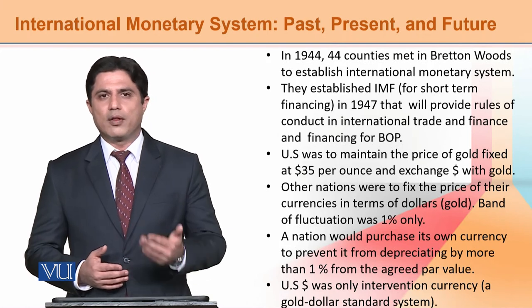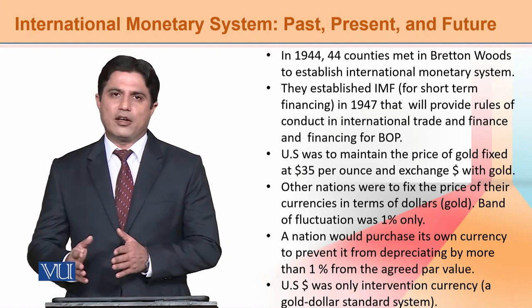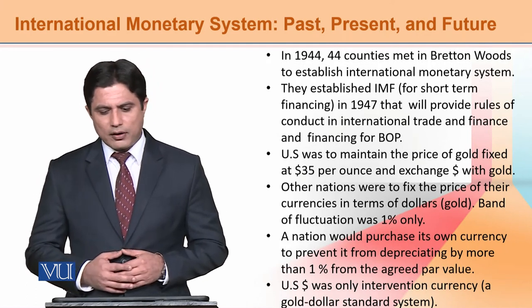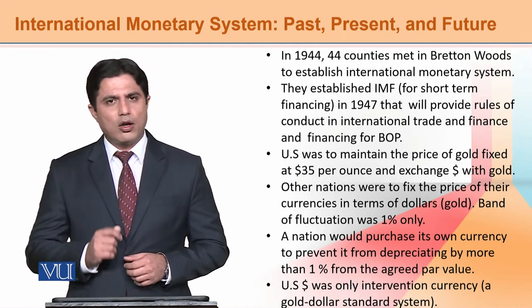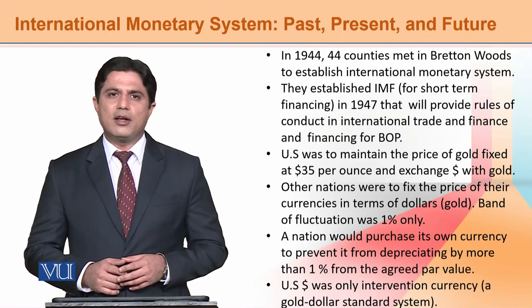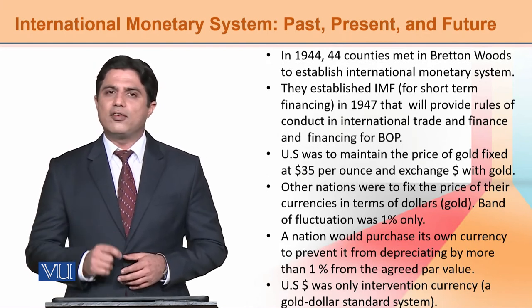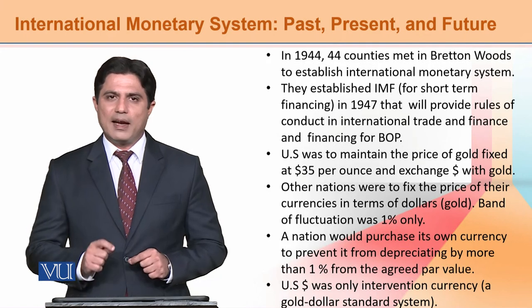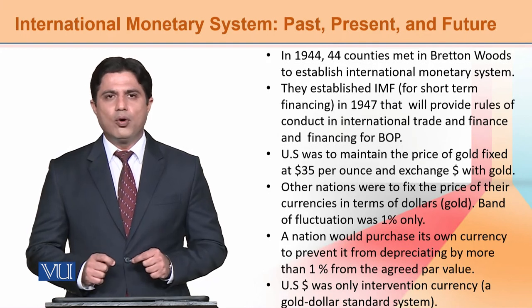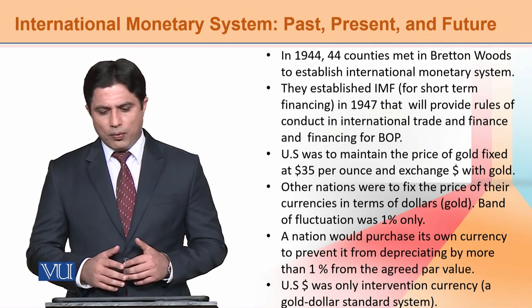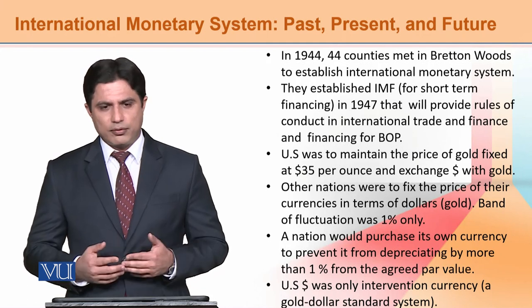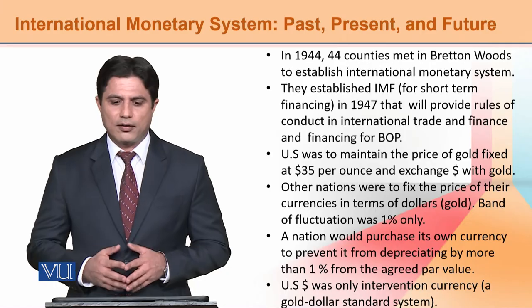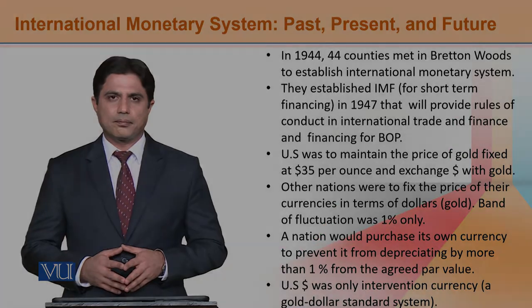If a country didn't have sufficient international reserves, it would go to the IMF. The US dollar was the only intervention currency — through the dollar you could solve issues. This whole arrangement is called the gold-dollar standard system.